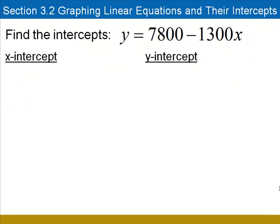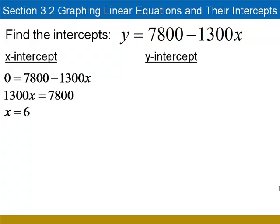There's the equation at the top of the screen. The x-intercept, substitute 0 for y, add 1,300x to the left side and divide both sides by 1,300. We find that the x-intercept is 6. For the y-intercept, we substitute 0 for x. Solve for y, the y-intercept is 7,800.